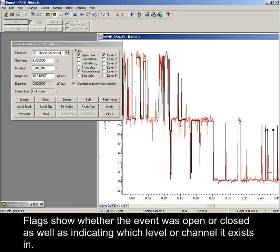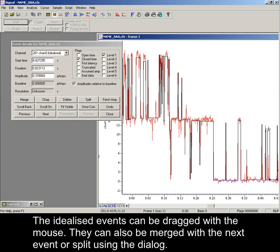Flags show whether the event was open or closed, as well as indicating which level, or channel, it exists in. The idealized events can be dragged with the mouse. They can also be merged with the next event, or split, using the dialog.